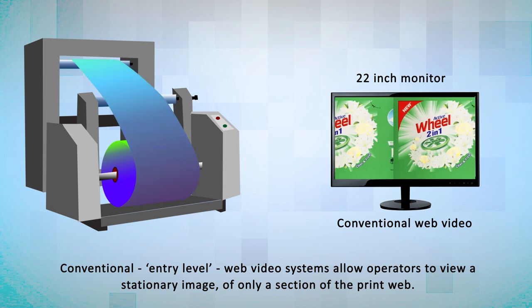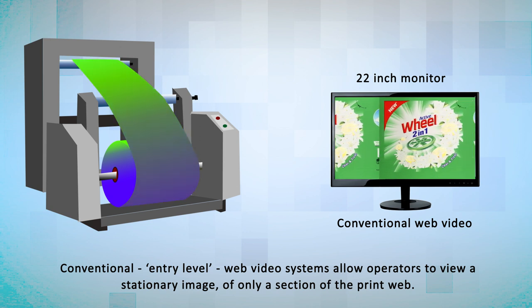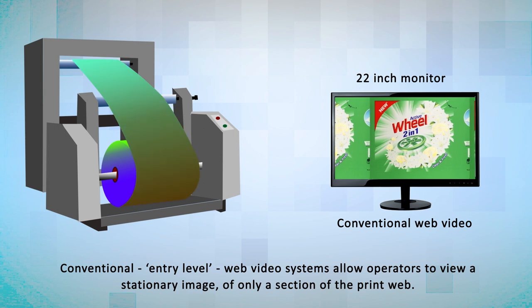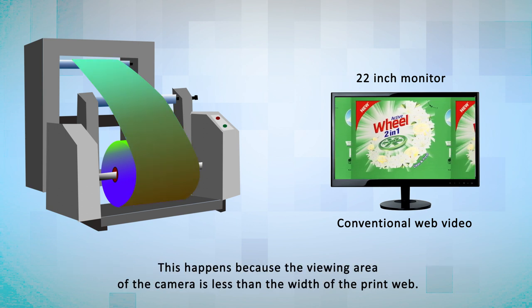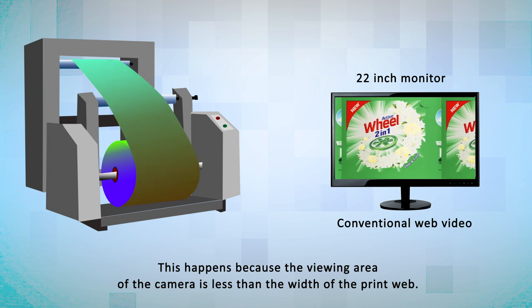Conventional, entry-level web video systems allow operators to view a stationary image of only a section of the print web. This happens because the viewing area of the camera is less than the width of the print web.